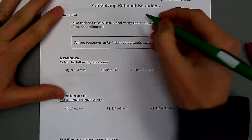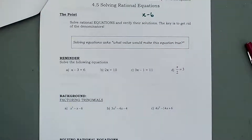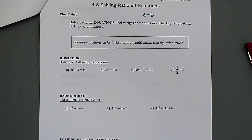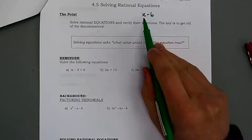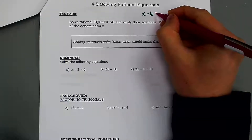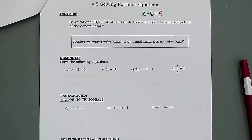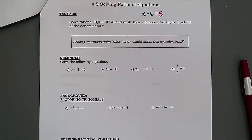Expressions are quite different because we have things like x minus 6 — there's no equal sign, this is an expression. It could represent a lot of things depending on what x is. If x is 10, the expression has a value of 4. But an equation is different because we introduce something like equals 5, and all of a sudden x has a very defined value.